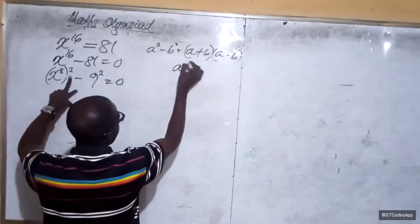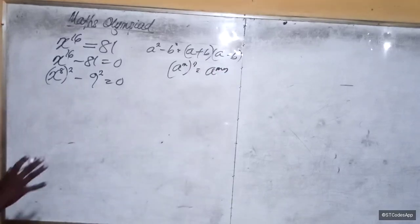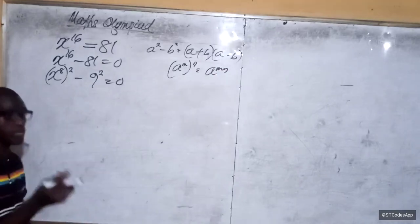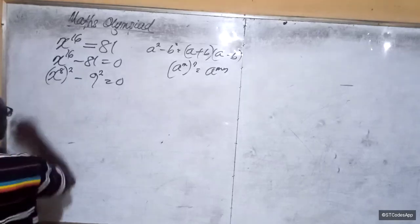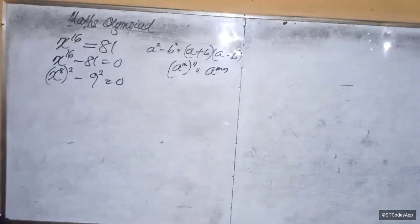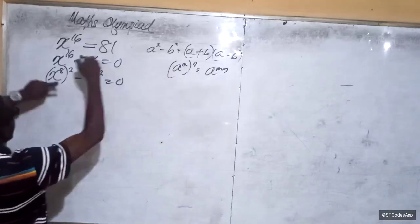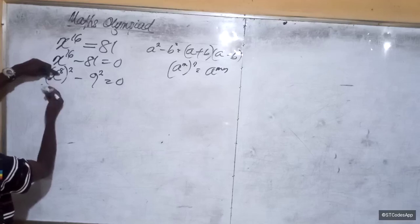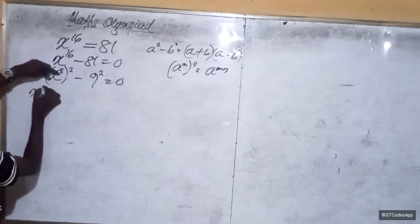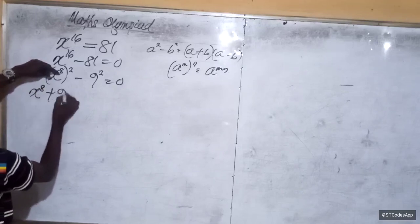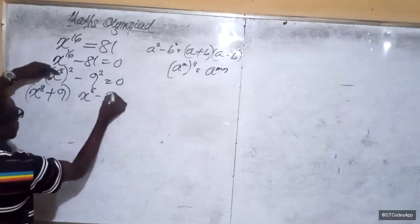Keeping in mind that a raised to the power m whole raised to the power n is equal to a raised to the power m times n. Remember that rule of indices. If you don't remember, I'm going to link the video of indices in the description. Since we have broken this down into that format, it means that what we essentially have is x raised to the power 8 plus 9 and x raised to the power 8 minus 9.